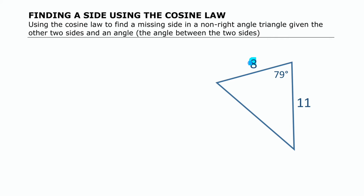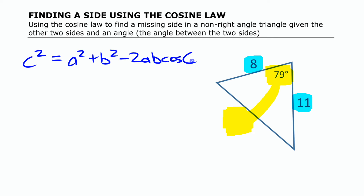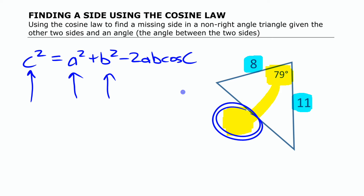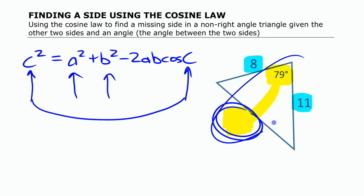The cosine law involves two sides and the angle in between them, and we use that to find the other side across from that angle. If we're going to set this up, we have our cosine law formula here — those are the letters you usually see used for that. All this means is: one side uses the other two sides and the angle across from the first side. This side and this angle go together.